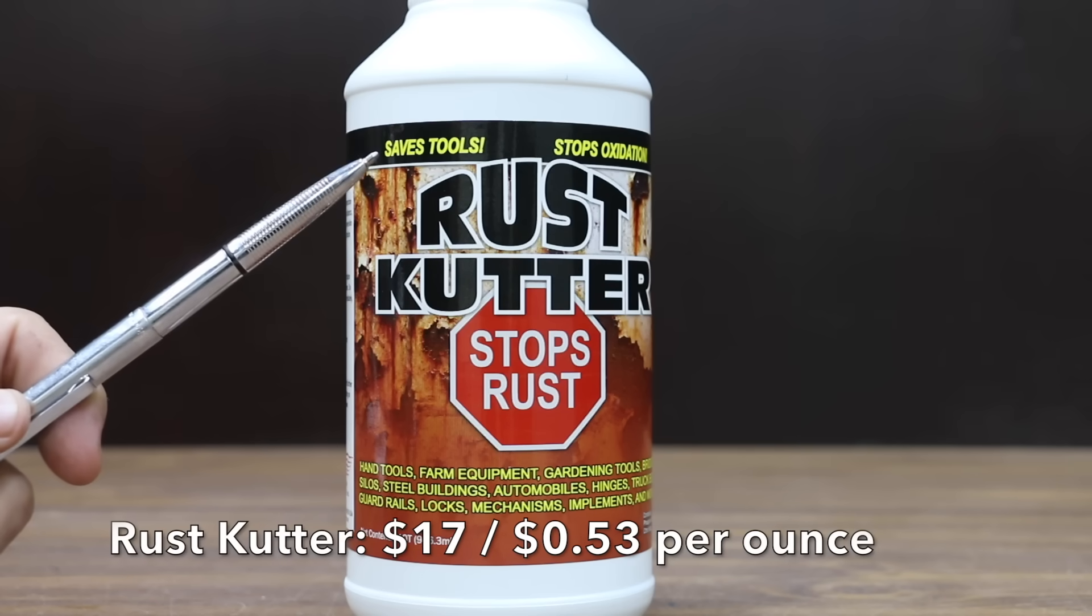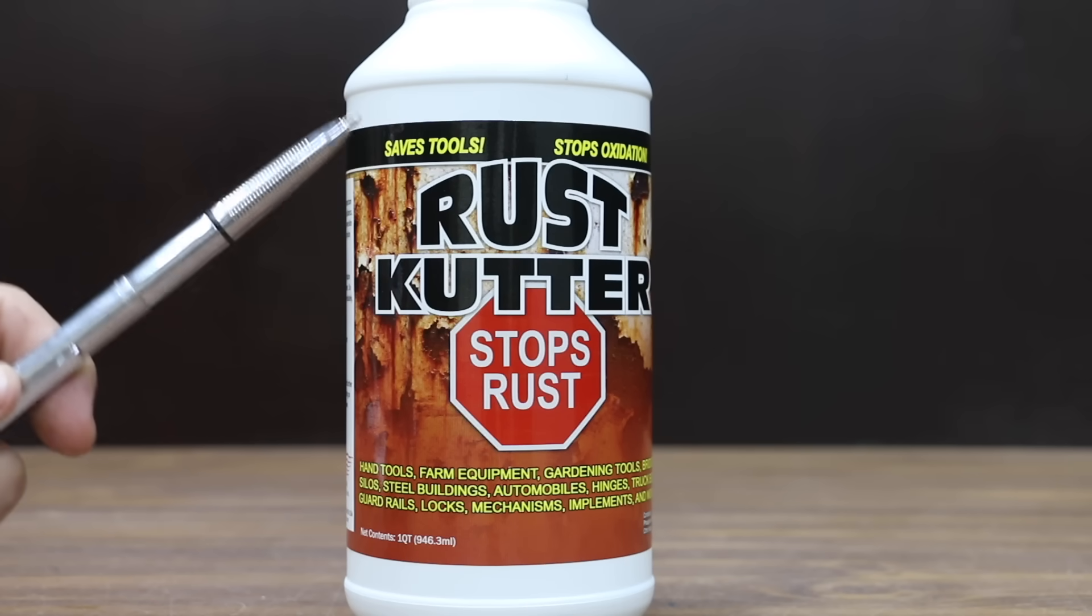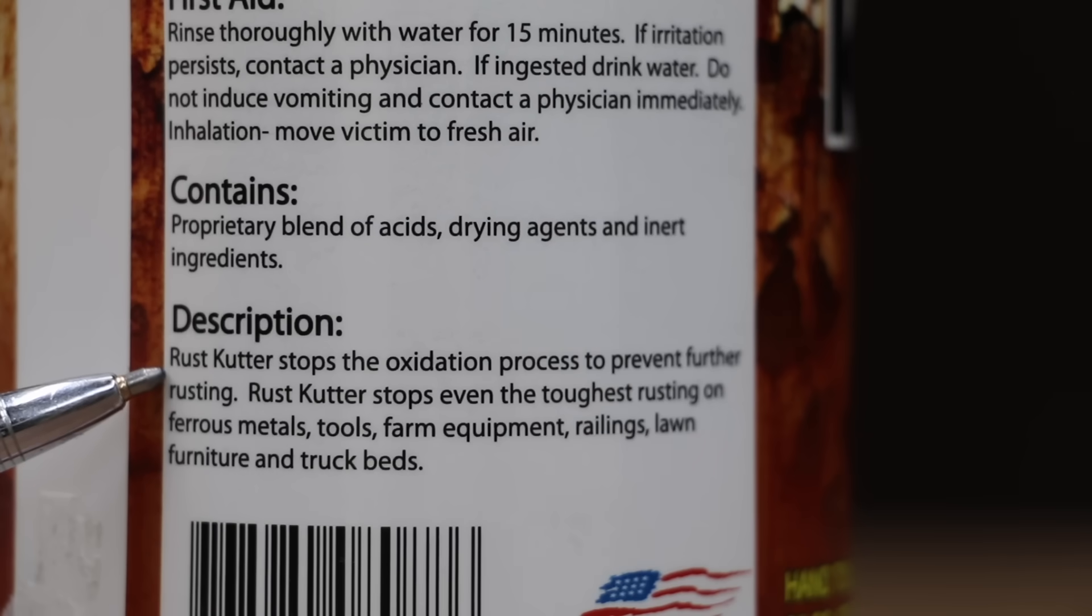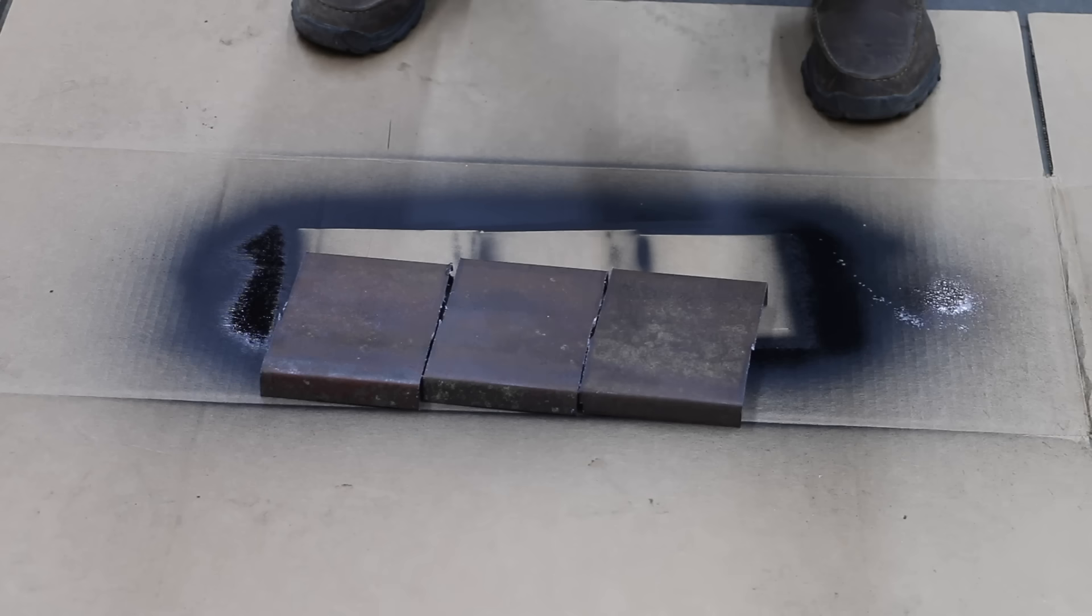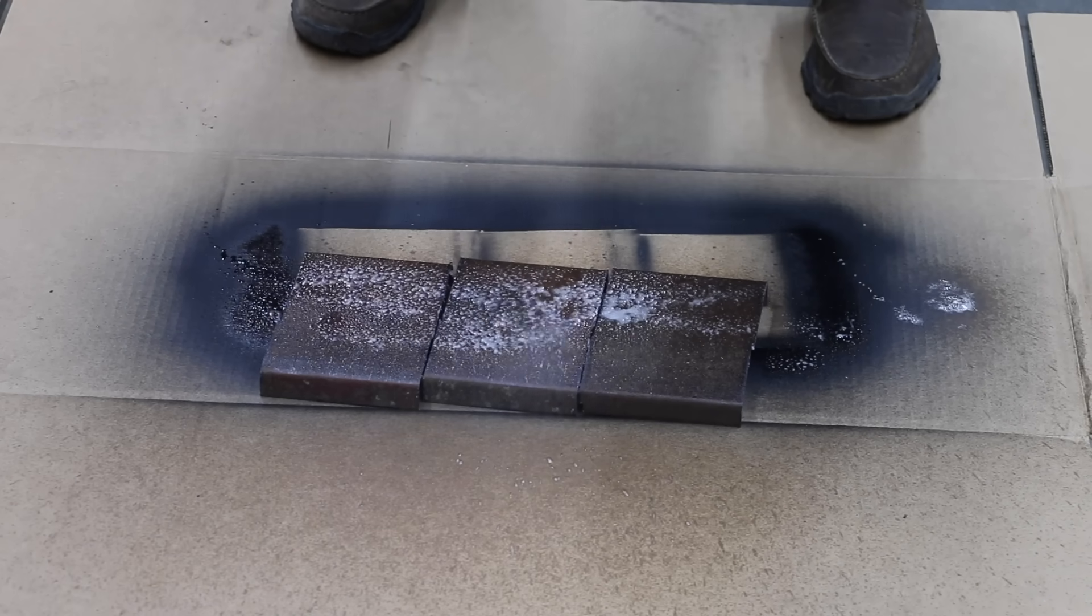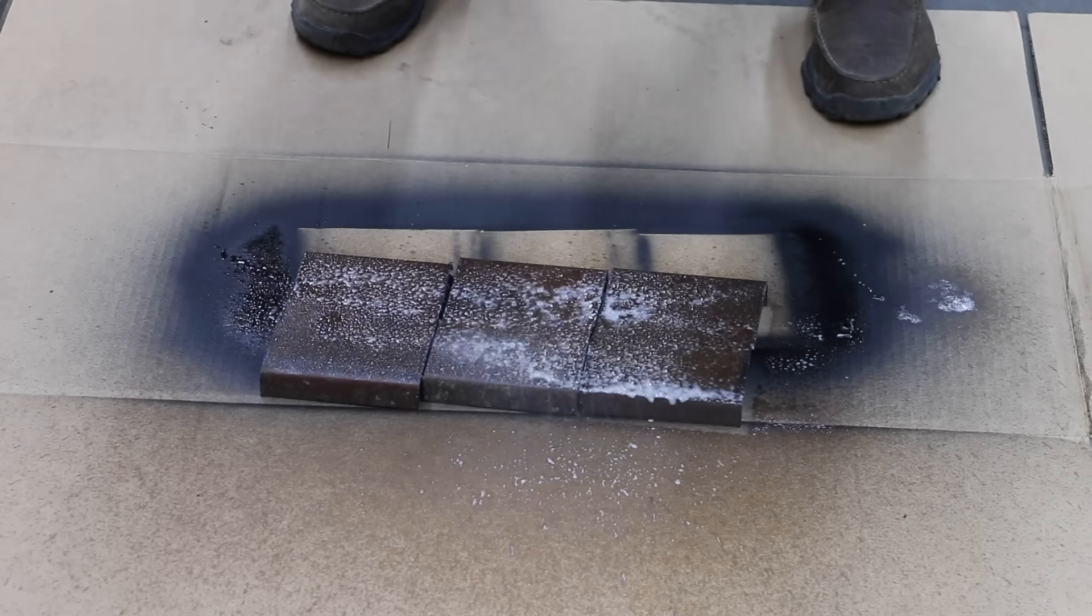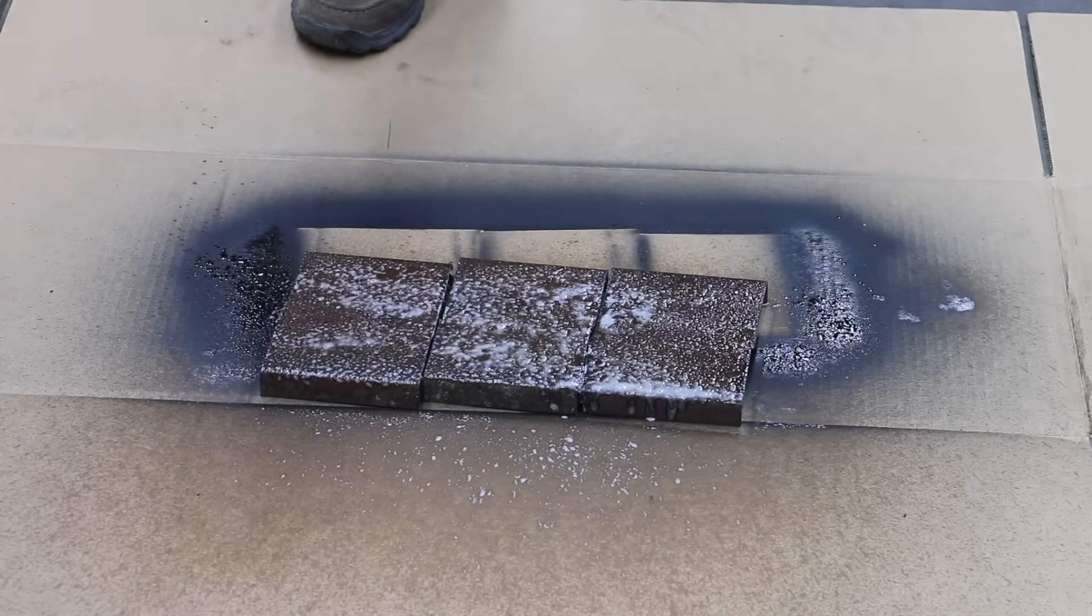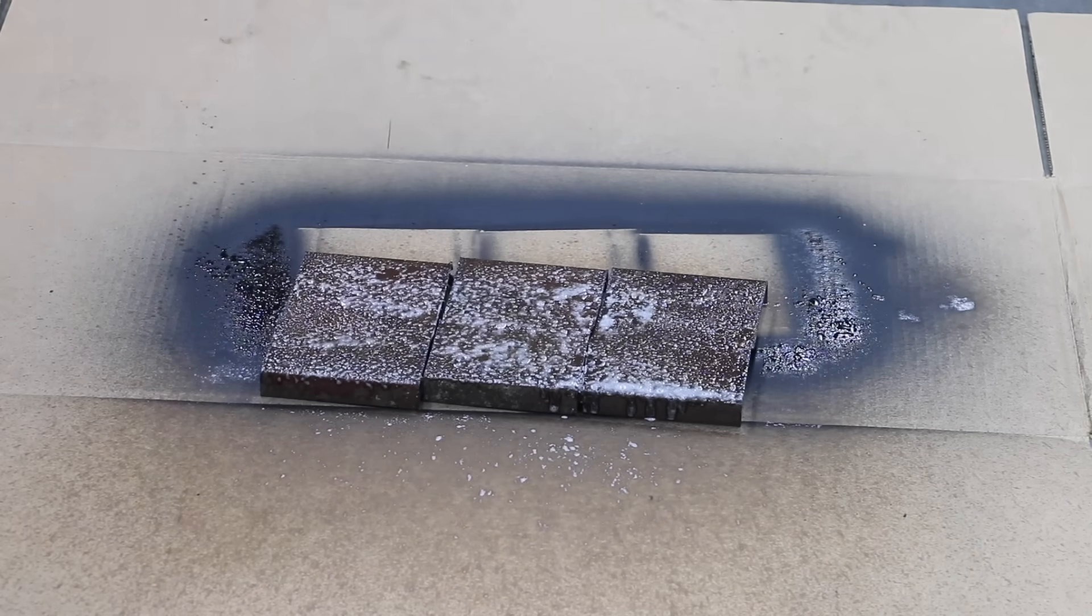At a price of $17 for 32 ounces or 53 cents per ounce is this Rust Cutter. It claims to stop rust. We're going to test that. Rust Cutter stops the oxidation process to prevent further rusting. The Rust Cutter is made in USA. Before using Rust Cutter, clean the area to be treated so that it is free from oils, grease, and grime. Remove any loose paint or rust with the wire brush or sandpaper. Do not grind to bare metal. Apply Rust Cutter to area and allow to dry.